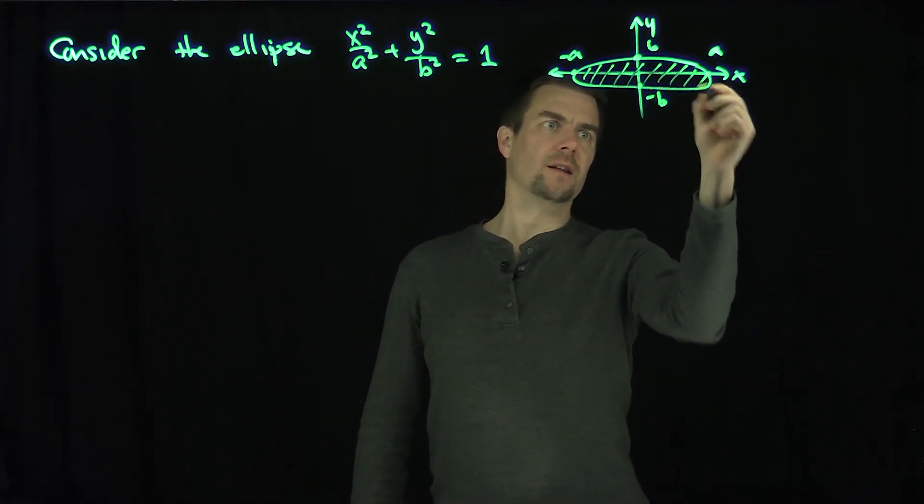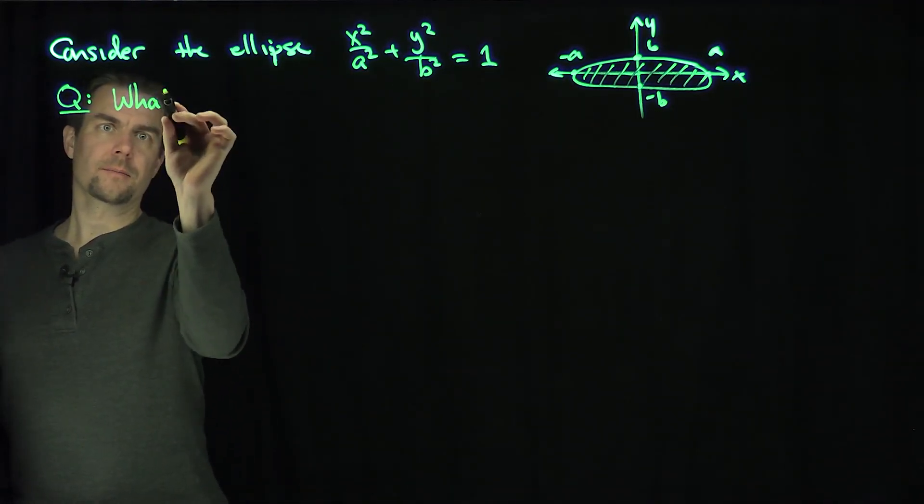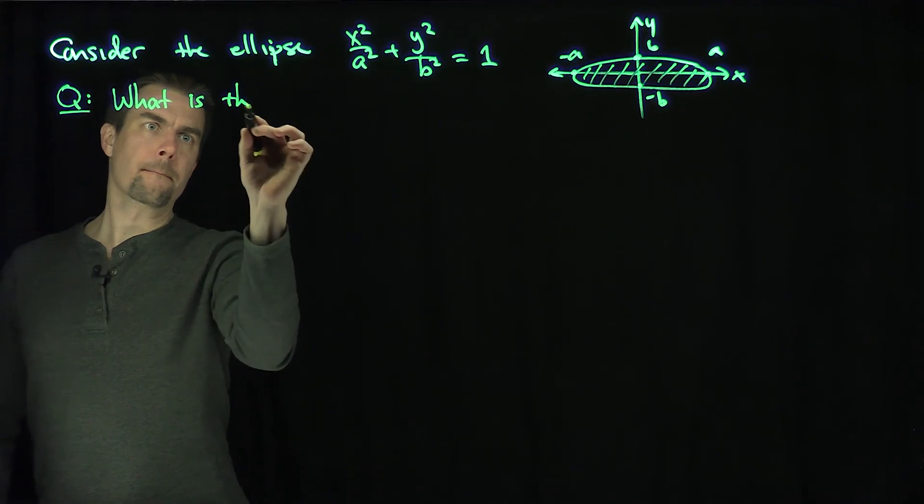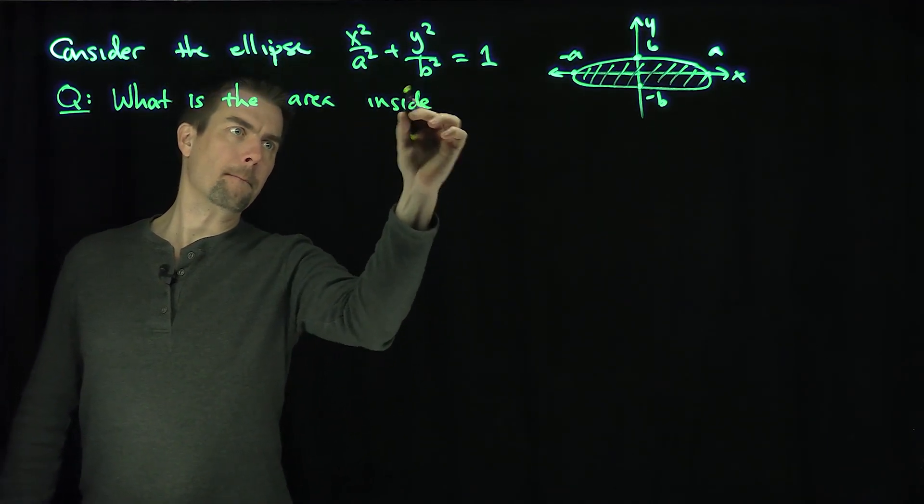I'd like to know what the area inside that ellipse is. What's the area inside? So question, what is the area inside?